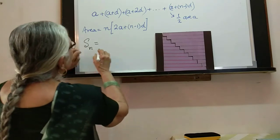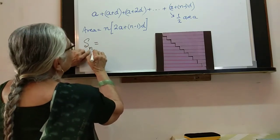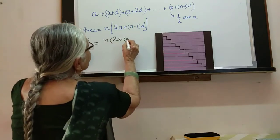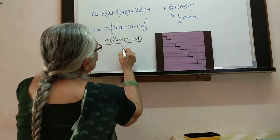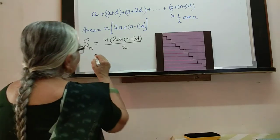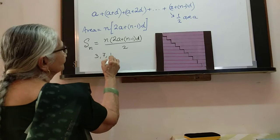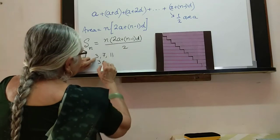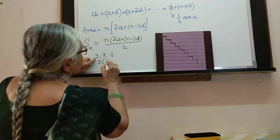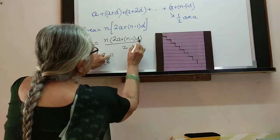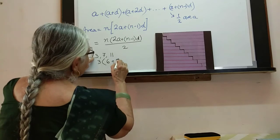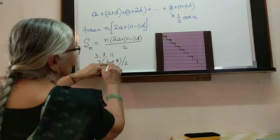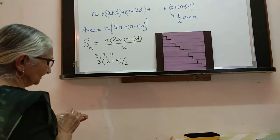Therefore, the sum of the first n terms of an AP is: S = n × [2a + (n-1)d] / 2. Let's verify with the example 3, 7, 11 — three terms, a = 3, d = 4, n = 3. We get 3 × [6 + 2×4] / 2 = 3 × [6 + 8] / 2 = 3 × 14 / 2 = 3 × 7 = 21. And indeed 3 + 7 + 11 = 21. ✓